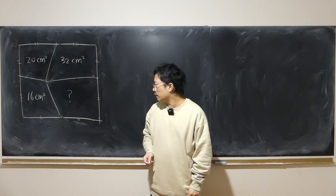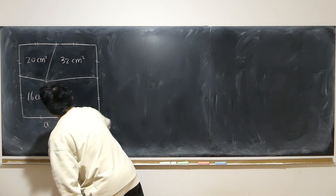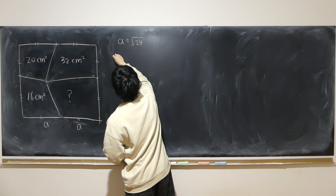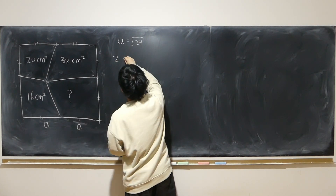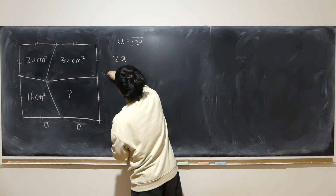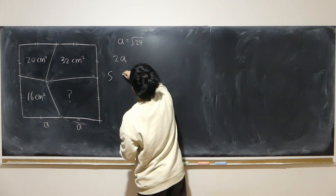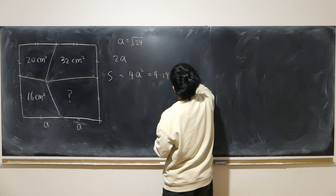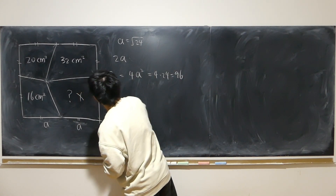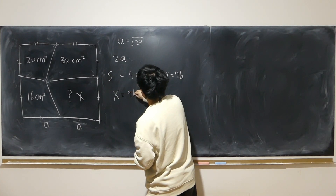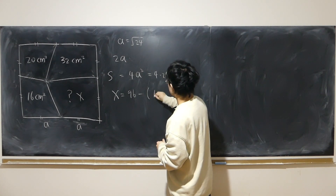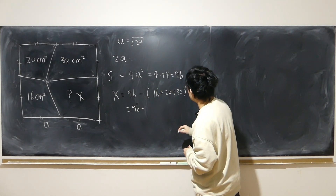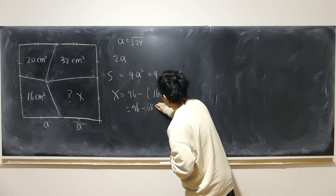I was totally overthinking it by solving for the edge of the square. Since A = √24, the edge is 2A, so the total area of the square is 4A² = 4 times 24 = 96. Then this unknown area is simply 96 minus 16 minus 20 minus 32, which gives 28 again.